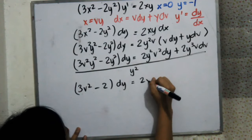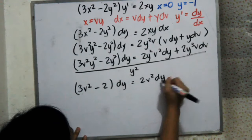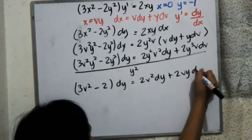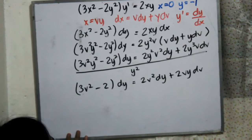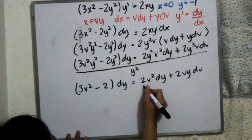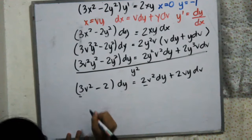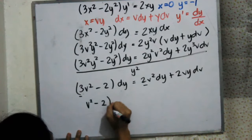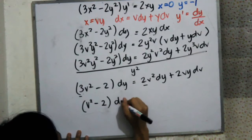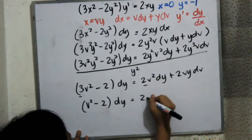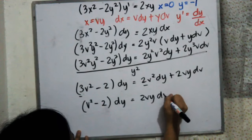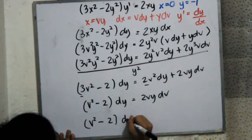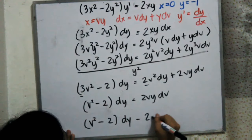After combining like terms and simplifying, we get v squared minus 2 multiplied by dy all equal to 2vy dv. We then need to manipulate it to separate the y's and the v's.